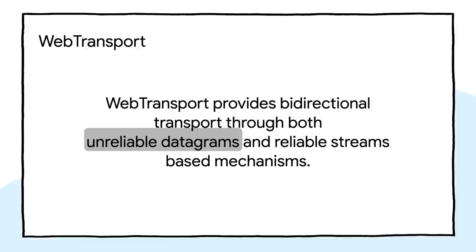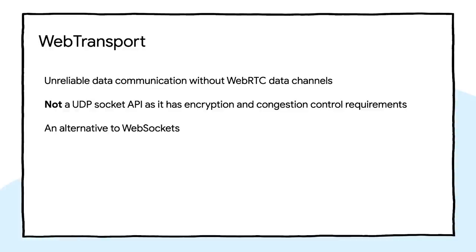Looking at the two different mechanisms: unreliable datagrams are similar to UDP datagrams in that they are packets of information that get sent but with no guarantees about delivery or ordering. Reliable streams, in contrast, are similar to TCP streams and provide reliable and ordered data communication. WebTransport will be the only mechanism to do unreliable data communication without leveraging WebRTC, and this is exactly why Zoom is interested in it — it'll allow them to simplify their deployment and put it more in line with the other platforms they support. Let's compare it to WebSockets and WebRTC in this chart.